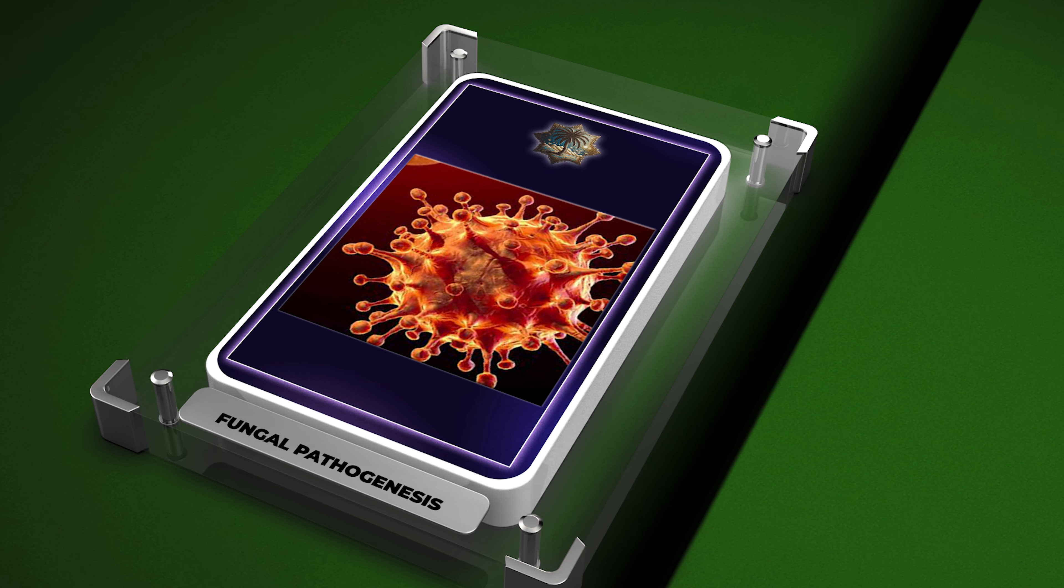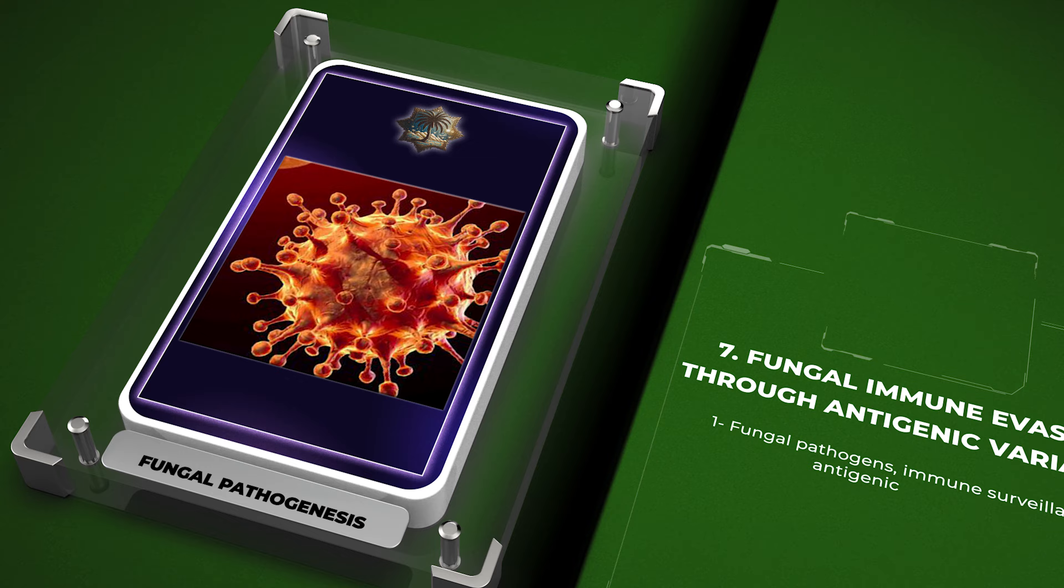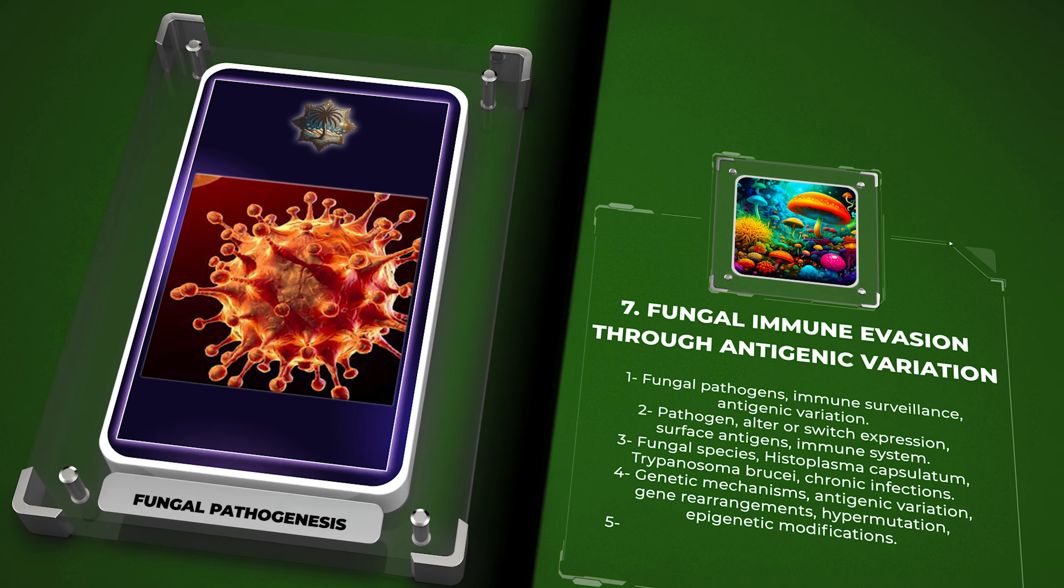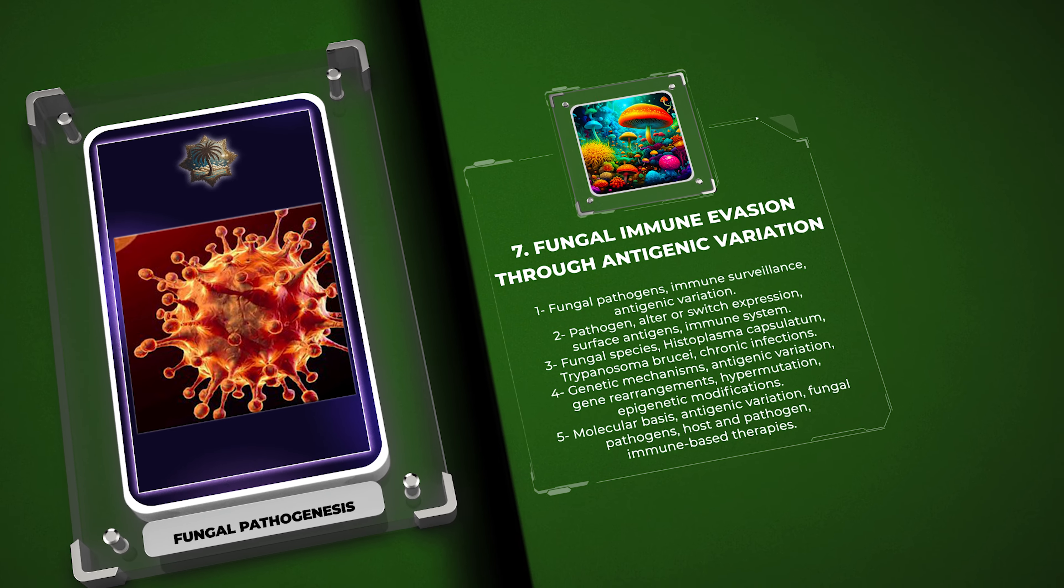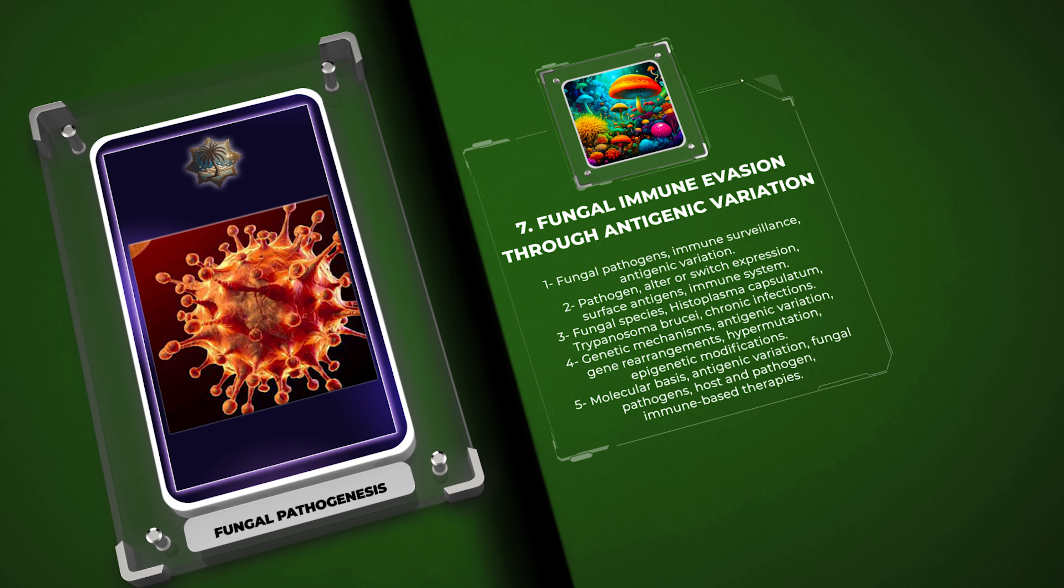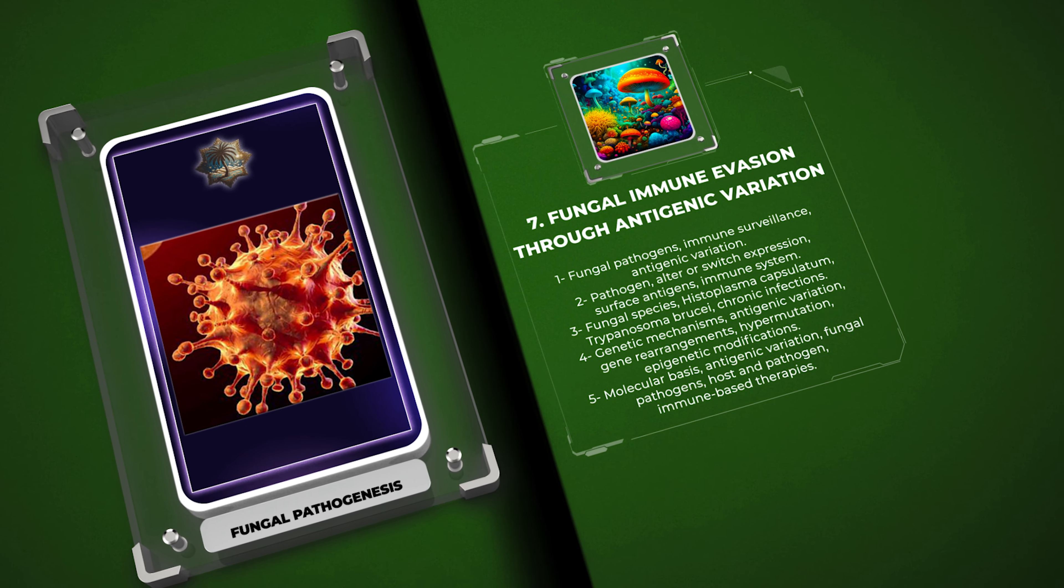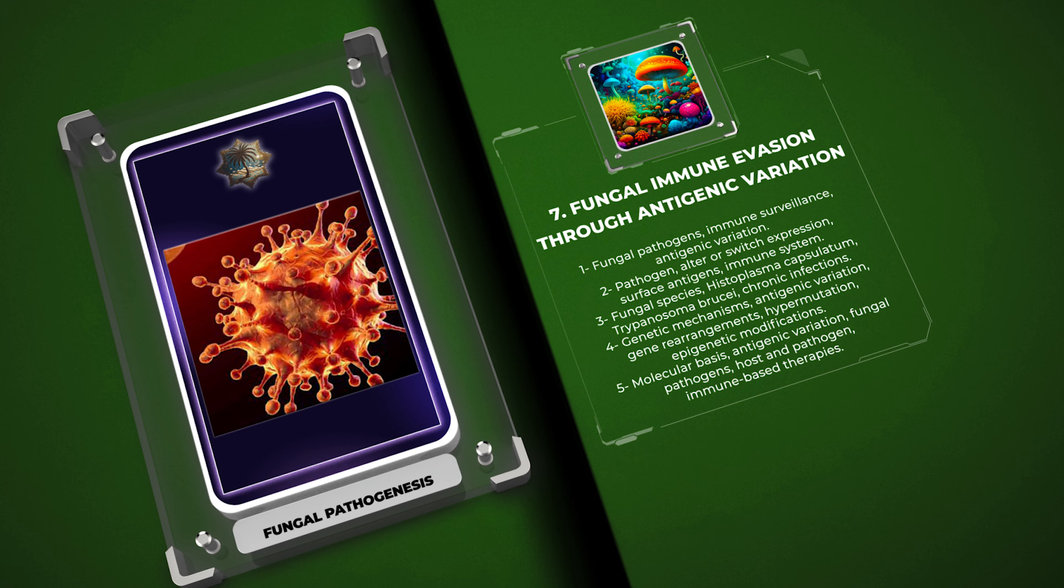Fungal pathogens employ diverse strategies to evade host immune surveillance, one of which is antigenic variation. Antigenic variation refers to the ability of a pathogen to alter or switch the expression of its surface antigens, thereby evading recognition and elimination by the host immune system. Fungal species such as Histoplasma capsulatum and Trypanosoma brucei utilize this mechanism to establish chronic infections.